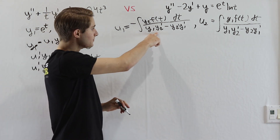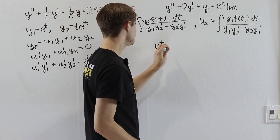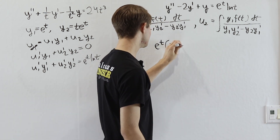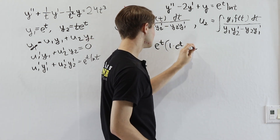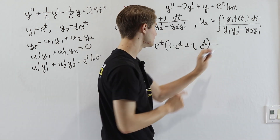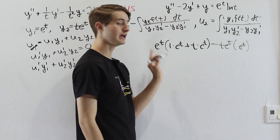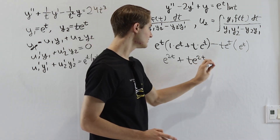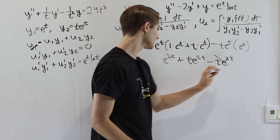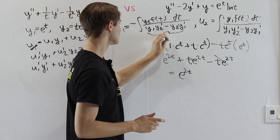We compute the Wronskian denominator y1·y2' − y2·y1'. With y1 = e^t and y2 = t·e^t, y2' = e^t + t·e^t by the product rule. So y1·y2' = e^t·(e^t + t·e^t) = e^(2t) + t·e^(2t). Then y2·y1' = t·e^t · e^t = t·e^(2t). Subtracting, the t·e^(2t) terms cancel and we get e^(2t).